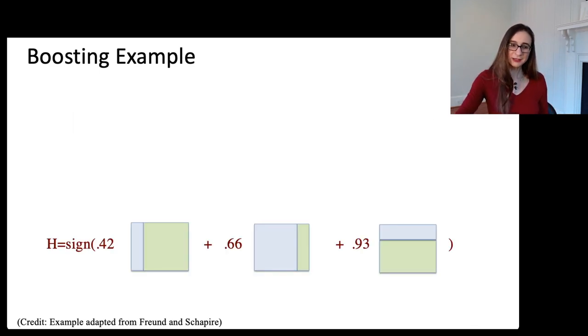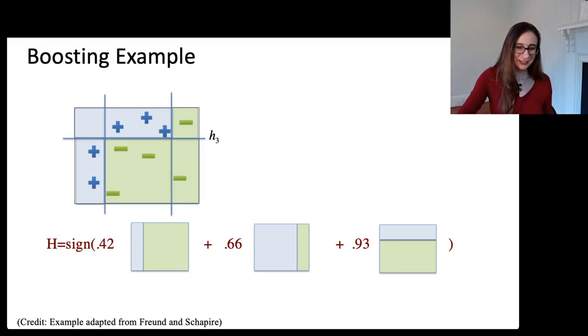Now, this is the final combined classifier here, where it took those three classifiers that it constructed and then weighted each one by alpha. And then, lo and behold, the final combined classifier looks beautiful. It correctly classified all of the data points.